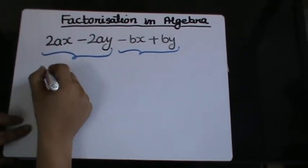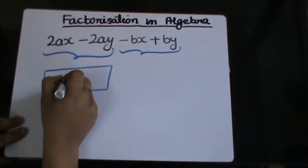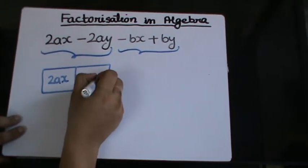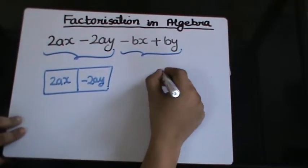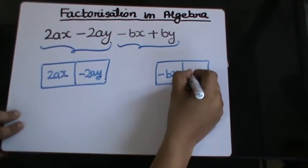So now I will factorize them separately. So I have 2ax minus 2ay and here I have minus bx plus by.